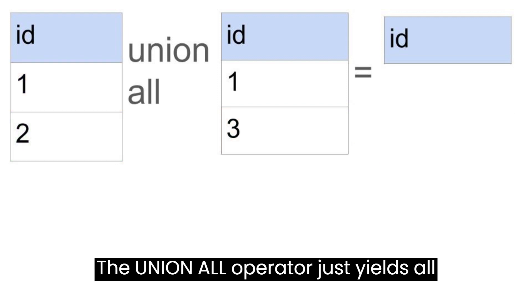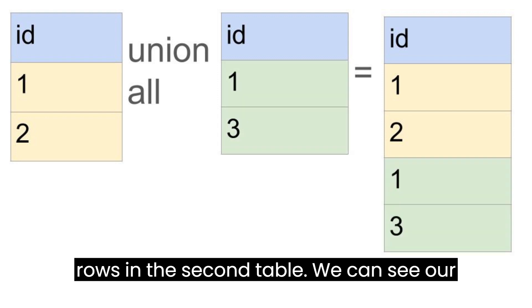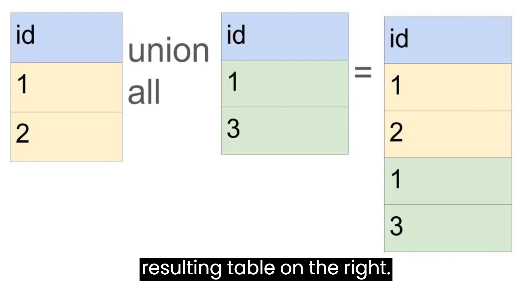The UNION ALL operator just yields all the rows in the first table and all the rows in the second table. We can see our resulting table on the right.